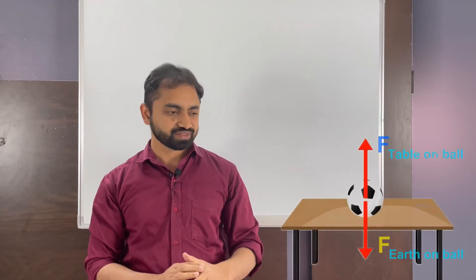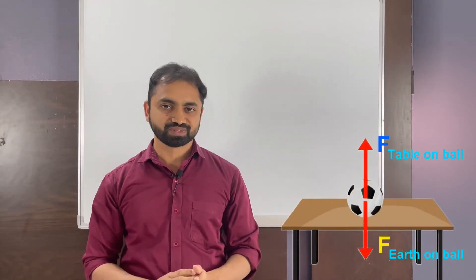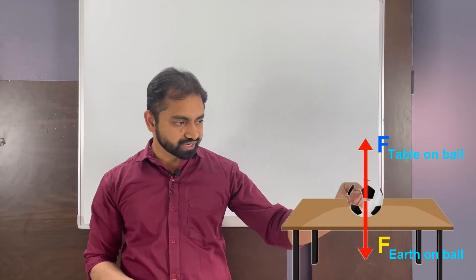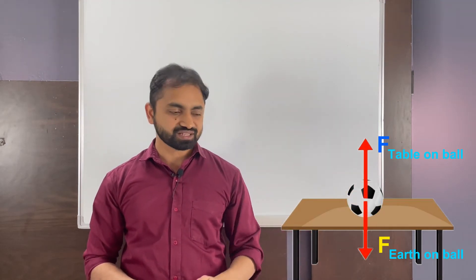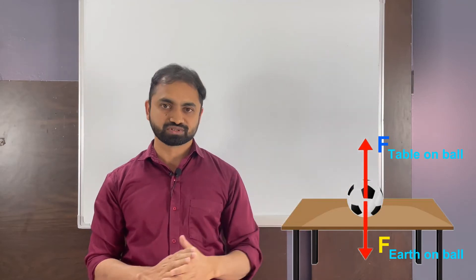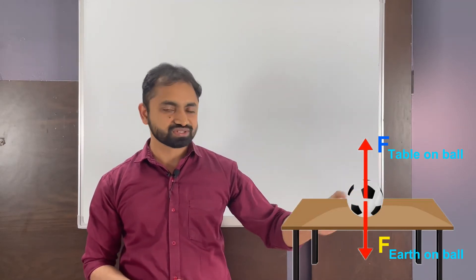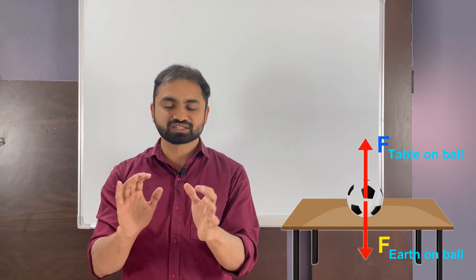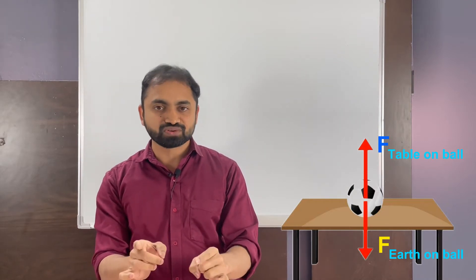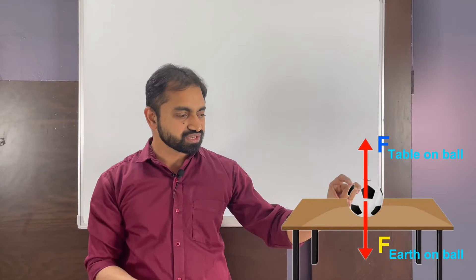For example, there are two forces acting on this ball: one is the weight of the ball acting downwards, and the second is the normal contact force acting upwards. These two forces are not interaction pairs because both the forces are acting on a single object.